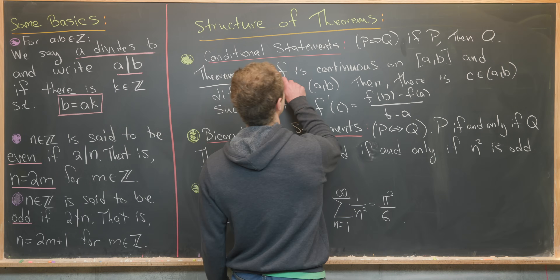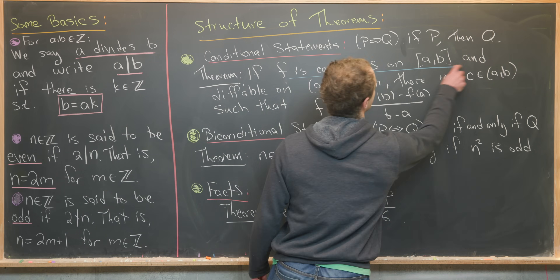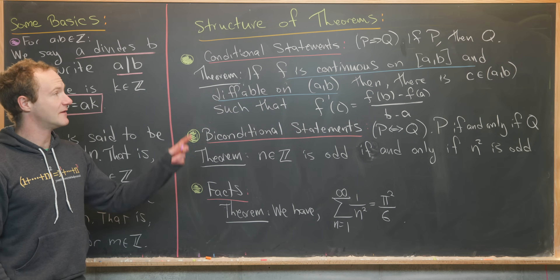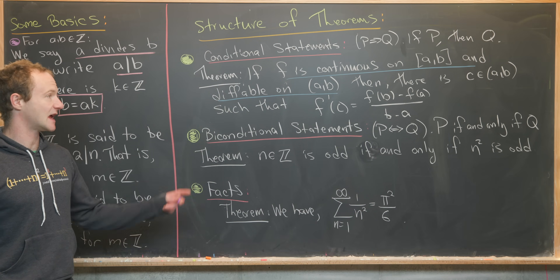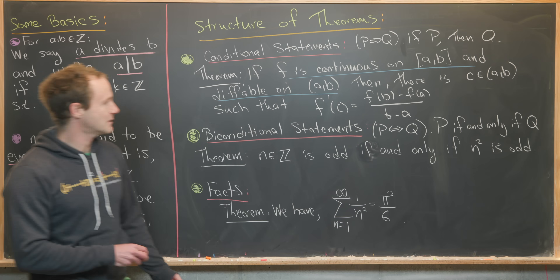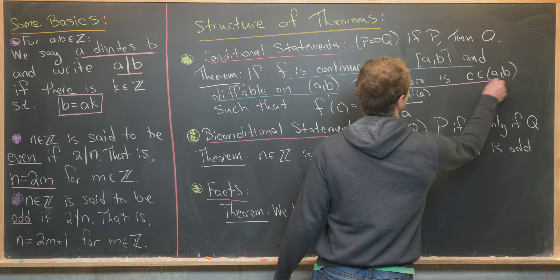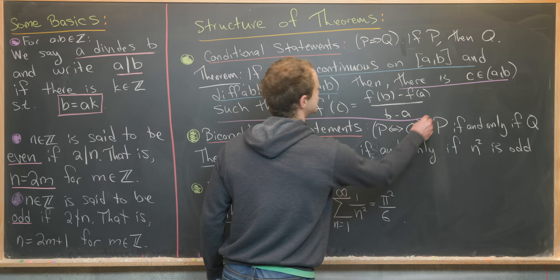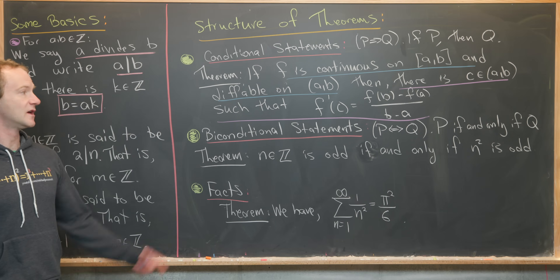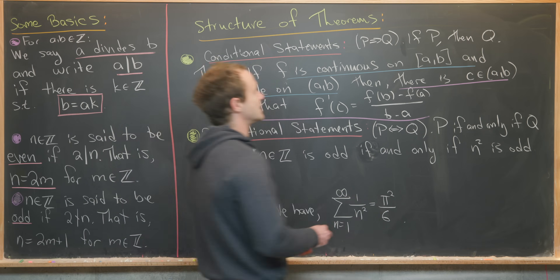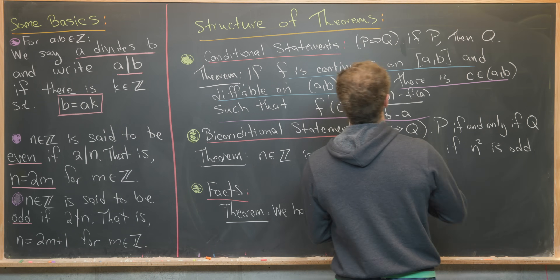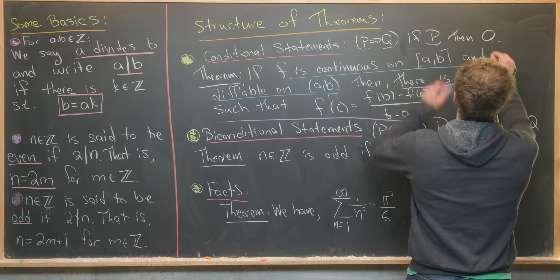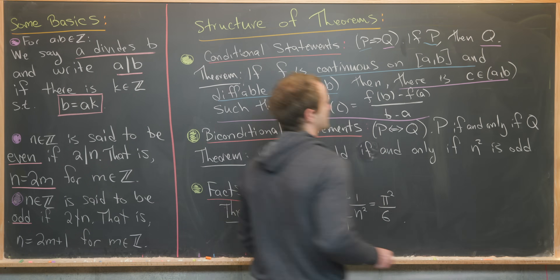Notice the P is a compound statement — F is continuous and differentiable. The Q brings about the existence of this C, and C satisfies the rule with the derivative. Let's color-code these: P implies Q, with P being the hypotheses and Q being the conclusion.